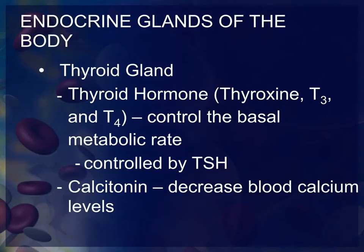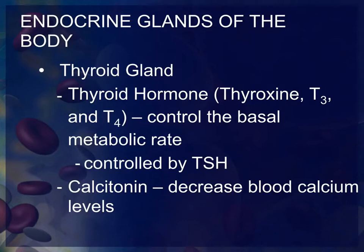Other endocrine glands located outside the brain include the thyroid gland, which is located around the throat area in front of the thyroid cartilage, or the Adam's apple. The hormone it produces is thyroid hormone — examples include thyroxine and T3 and T4 hormones — and their job is to control the basal metabolic rate, which is the control of your metabolism and all the chemical processes and reactions happening in the body.